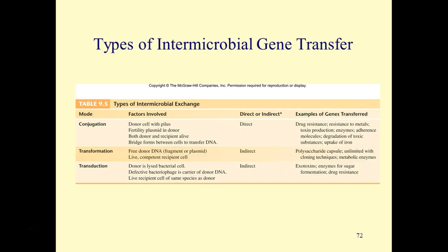The donor may actually be dead, but the living recipient has to accept the donor DNA. This was first seen with polysaccharide capsules, as was discovered by Griffiths. It is unlimited with cloning techniques and quite important in microbial genetics. Transformation is also readily used in genetic engineering techniques, and metabolic enzymes can also be introduced into a cell via transformation.